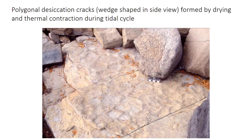Peritidal settings — the intertidal and sometimes the supratidal — are places of intermittent wetting and drying as the tide rises and falls. Because of that, sedimentary structures associated with desiccation are extremely indicative of peritidal deposition. The most common are polygonal networks of desiccation cracks, or mud cracks. You see them in drying water bodies like lake beds; if you go to Death Valley, you see desiccation cracks all the time. They just reflect wetting and drying of the sediment.